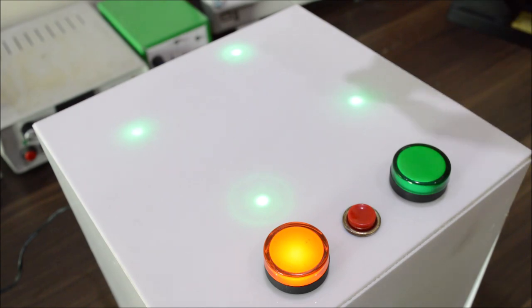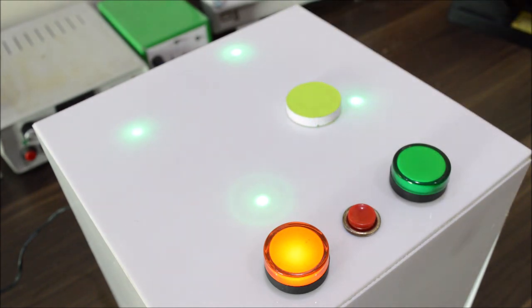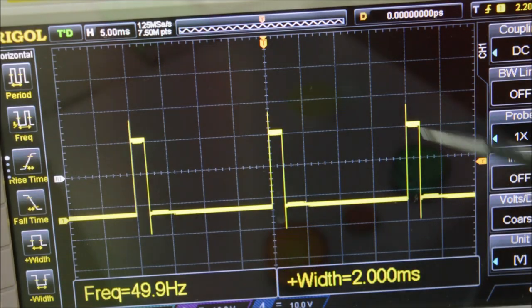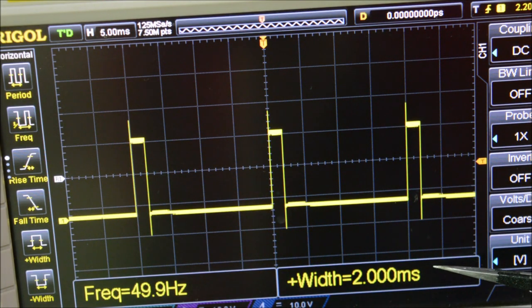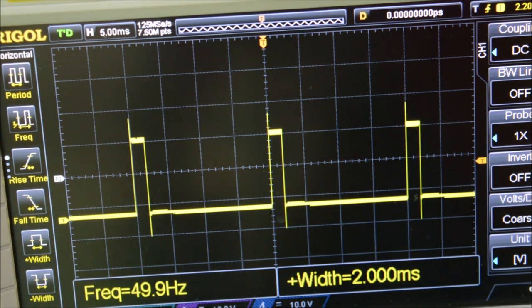But when you place the magnet in front of the correct LED, the reed switch will give signal to the 555 timer IC, so it will increase the on time from one millisecond to two milliseconds, which will rotate the servo from zero degree position all the way to 180 degree position.